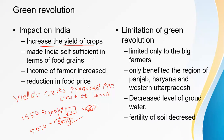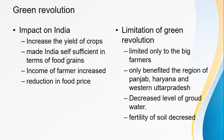Because of the Green Revolution, India became self-sufficient in terms of food grains. Do you know that during 1965, when our country was facing a food crisis, we had to import food grains from the USA and other countries? But after the Green Revolution, we had enough stock of food grains and India became a self-sufficient country that no longer needed to import food grains.